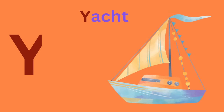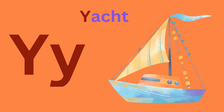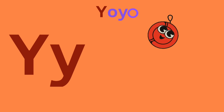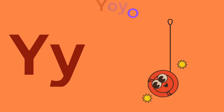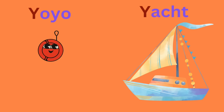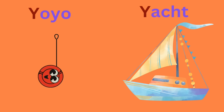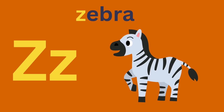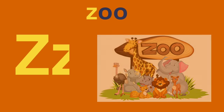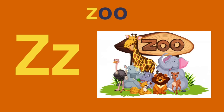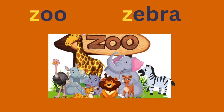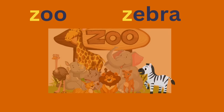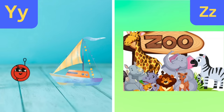Y for yacht. Y for yo-yo. Y for yo-yo and Y for yacht. Z for zebra. Z for zoo. Z for zebra and Z for zoo.